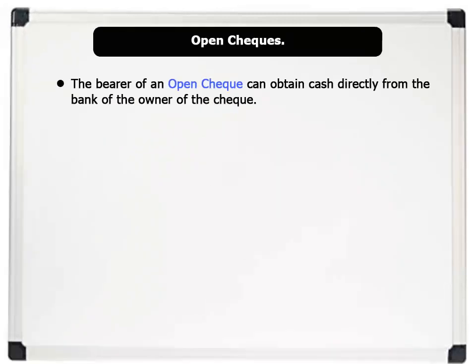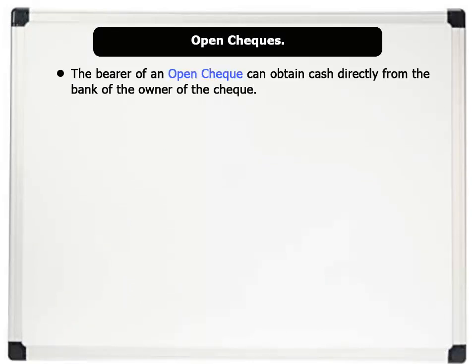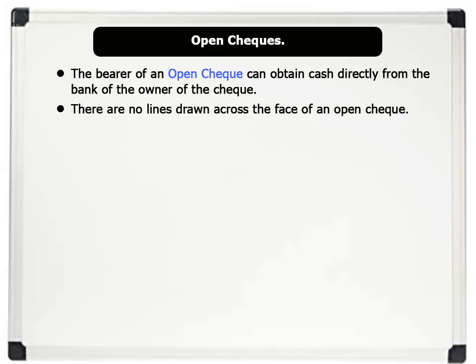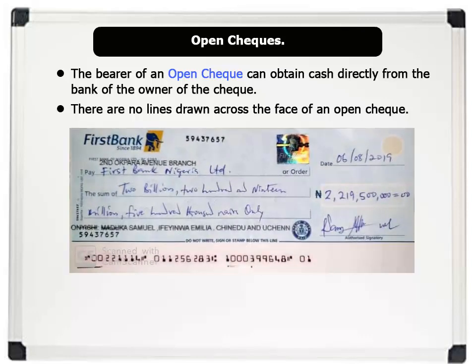2. Open Check. The bearer of an open check can obtain cash directly from the bank of the owner of the check. Also, there are no lines drawn across the face of an open check. A sample of an open check is shown on the board. Notice and learn how the check is also filled out: the date, the name of the bearer, the amount of money to be paid to him in words and in figures, and the signature of the owner of the check. Now, let us discuss discounts.